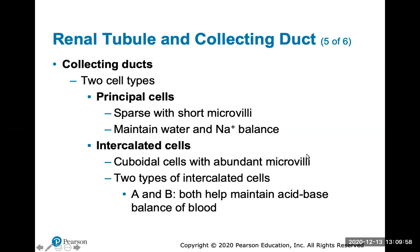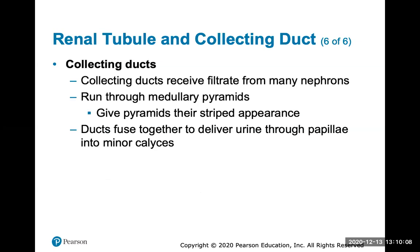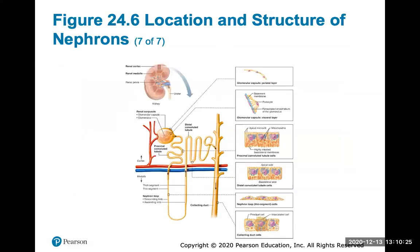There are two types of cells in the collecting ducts: principal cells, which maintain water and sodium balance, and intercalated cells (types A and B), which both help maintain acid-base balance of the blood. The collecting ducts receive filtrate from many nephrons, run through the medullary pyramids giving them a striped appearance, and eventually fuse together to deliver urine through the papillae into the minor calyxes. This is a good review of the system — filtrate flows through the proximal convoluted tubule, down and up the nephron loop, through the distal convoluted tubule, and into the collecting duct.